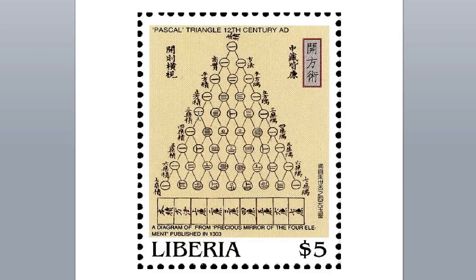Now this row: 1, 4, this must be the number 6, because it comes from 3 plus 3, which gives us 6, then 4, and then 1. One more row: 1, there are 5 little lines right here, so 1, 5, that must be the number 10, 10, 5, 1.